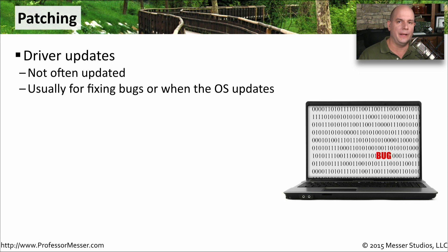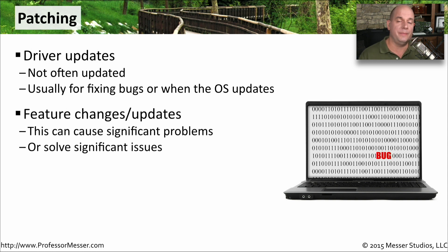Another update that you don't see happen a lot is one for a device driver — the software that interfaces our operating system to the hardware itself. Device drivers are usually only updated if there's a bug fix or if you need a different operating system version. We also see device drivers being updated more for certain kinds of hardware than others; for example, a video driver might be updated a lot more than a network interface card. Sometimes a device driver update might include new features or configuration settings, and that might create problems for using that particular piece of hardware, or it might solve significant usability problems. Make sure you look at the release notes to know exactly what's going to change when you update a device driver.